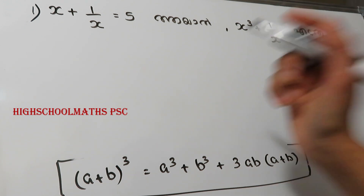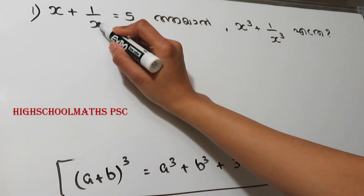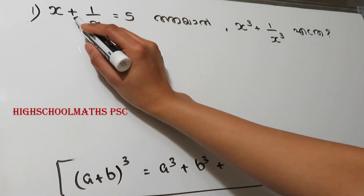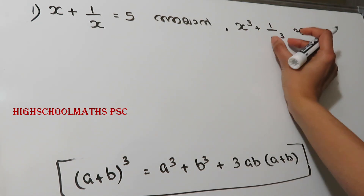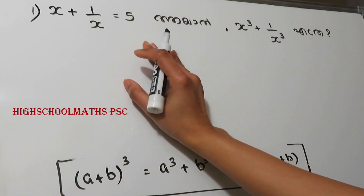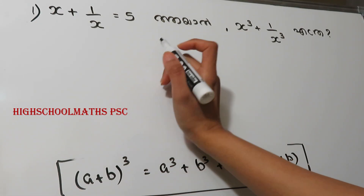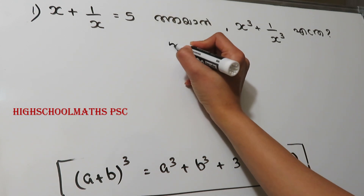Now we will discuss this. This is x and 1 by x. This is more than x. So we will discuss the value of x-cubed plus 1 by x-cubed. Here we will discuss the number 5.